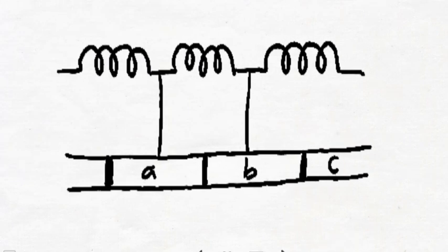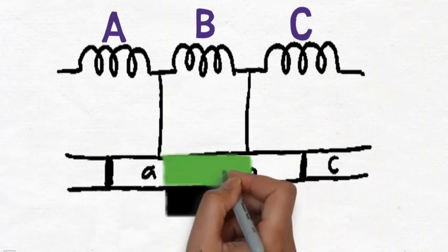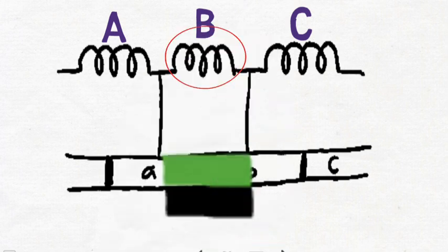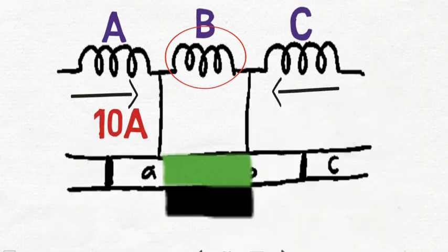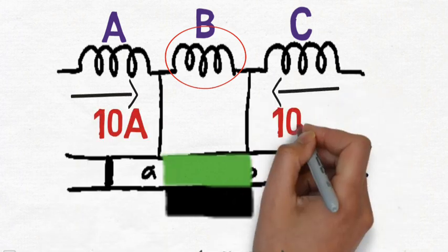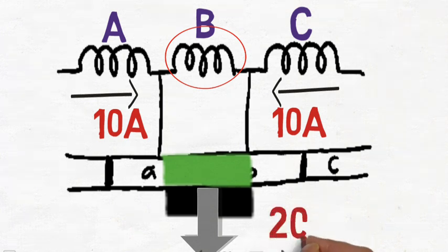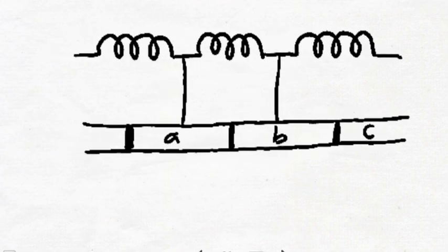In the third case, the commutator segment again shifts to the right and the brush moves further toward segment A. In this case, the brush contact area is equal for both segments. Due to this, coil B is bypassed and current flows only from coil A and coil C — each 10 amperes — and their addition of 20 amperes is given to the output of the brush.